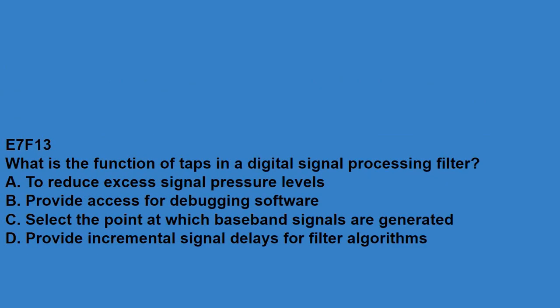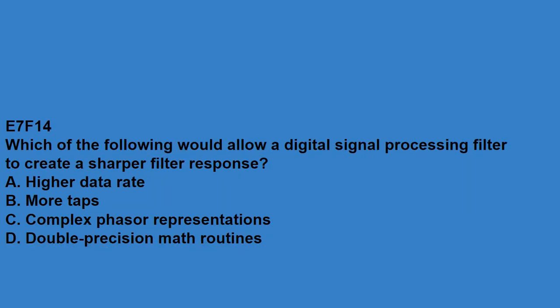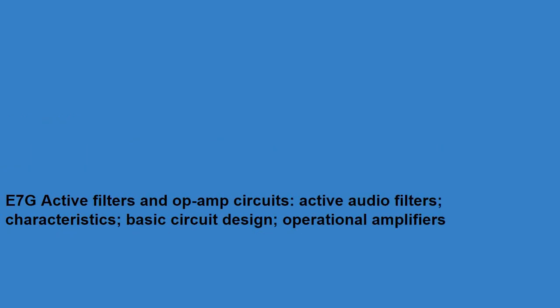E7F13, what is the function of taps in a digital signal processing filter? Provide incremental signal delays for filter algorithms. E7F14, which of the following would allow a digital signal processing filter to create a sharper filter response? More taps. E7G covers active filters and op-amp circuits, active audio filters, characteristics, basic circuit design, and operational amplifiers.